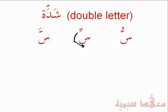Another point is that the Shaddah can go on any letter except for the Hamzah or the Elif — so any other letter can accept a Shaddah. Now let's dissect the Shaddah on top of these letters. We said that the Shaddah represents a doubling of the letter, so here there are two Seens because the Shaddah is there.